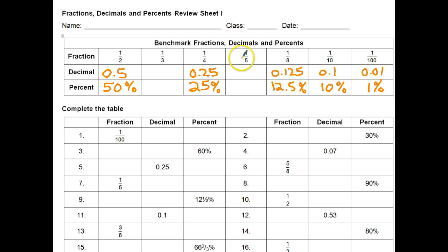And looking at a fifth, well, five goes into a hundred twenty times, so one-fifth is the same as 20%, and as a decimal is 0.2.